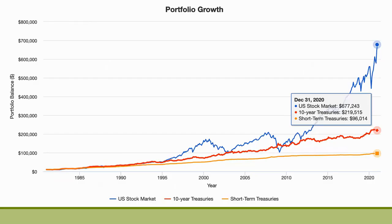This slide shows the period from 1981 through 2020 — essentially somebody's whole accumulation stage from just after undergrad to retirement. The blue line is the U.S. stock market, the red line is 10-year treasury bonds, and the orange line is short-term treasury bonds. It shows what would happen if you had invested $10,000 at the beginning of this period in each of these three asset classes. As you can see, stocks grew by quite a bit more than the bond investments.